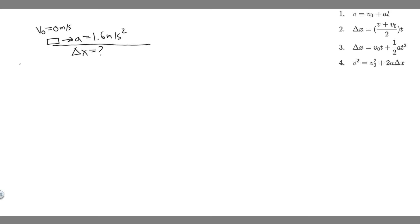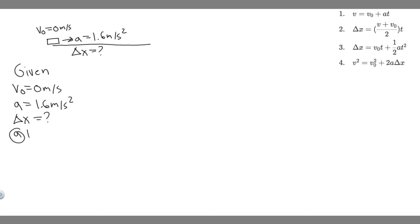The way we're going to solve this problem, first you want to write out the given. We're given the initial velocity, which is 0 meters per second. We're given the acceleration, which is 1.6 meters per second squared. And what we're trying to find is delta x. The thing that's changing about this problem is the time intervals: for A we're using 1 second, for B it's 2 seconds, and C is 3 seconds. These are all the time values, t.